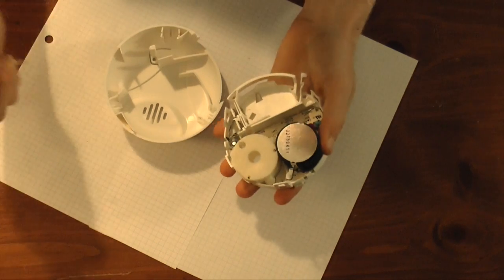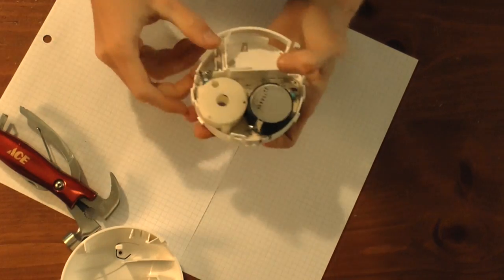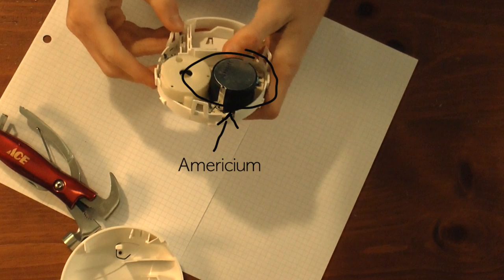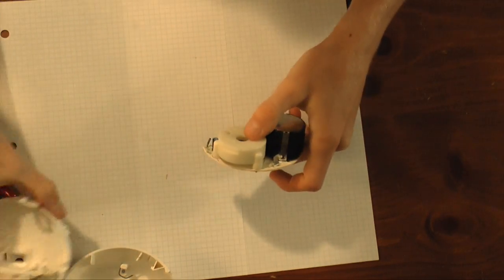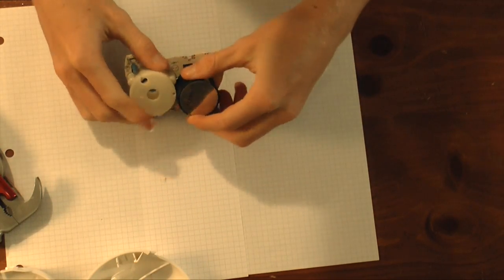So we can get our americium-241 source from a common household smoke detector. There's the americium right there, and as soon as I can crack that bad boy open, we can get to our alpha radiation source.